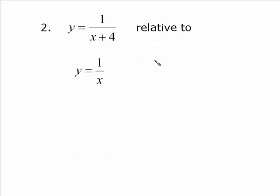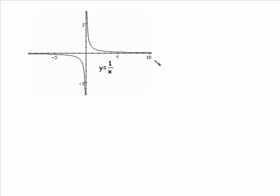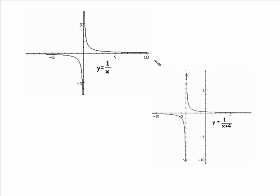And this one, y is equal to 1 over (x plus 4) relative to y is equal to 1 over x. You will recognize 1 over x as a reciprocal function, which means that x cannot be equal to 0. So you get a graph looking like this in quadrants 1 and quadrants 3. So the graph of y is equal to 1 over (x plus 4), we have replaced x with x plus 4.